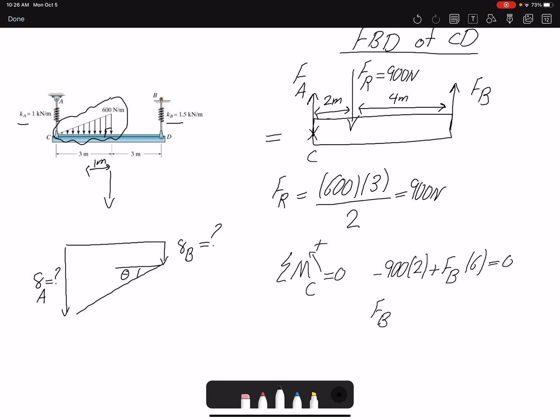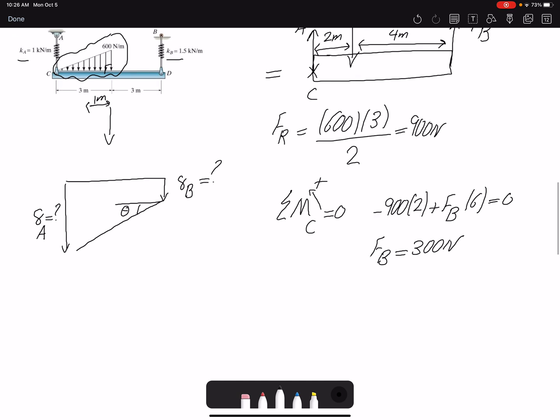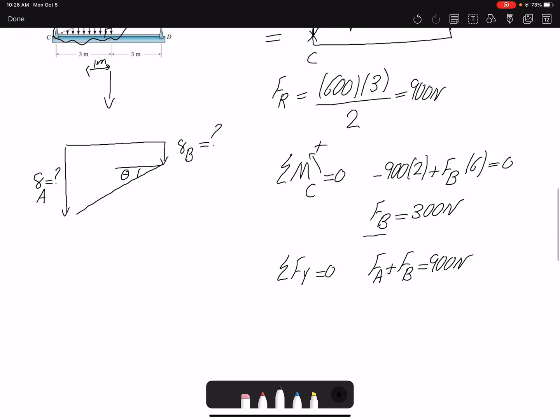So simply, Fb would be 300 Newtons. If I write summation of forces in y equals zero, I have Fa plus Fb equals 900 Newtons. If Fb is 300, then Fa would be simply 600.